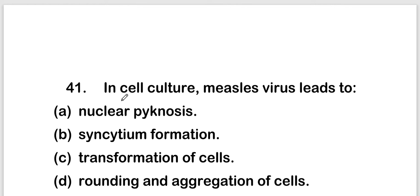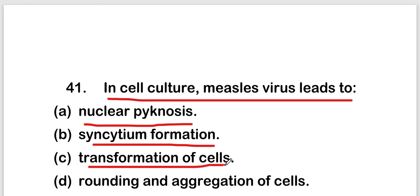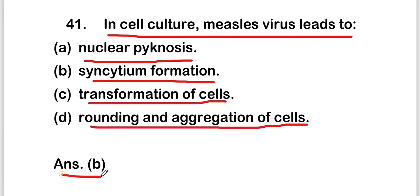The first question is: in cell culture, measles virus leads to nuclear pycnosis, syncytium formation, transformation of cells, or rounding and aggregation of cells? The right answer is option B, that is syncytium formation. So in cell culture, measles virus leads to syncytium formation.